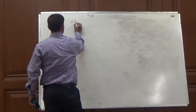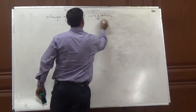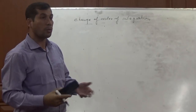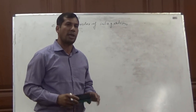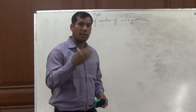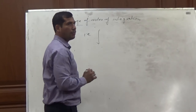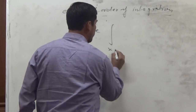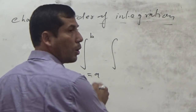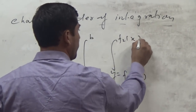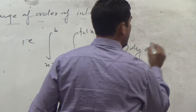Today we will discuss the change of order of integration. First of all, what is the need — why we are studying change of order of integration? Change of order of integration means we will change the limits of the integration. We will change the strip: if the strip is parallel to the x-axis then we will consider it parallel to the y-axis. In double integration, the first integration for x goes from x = a to b, with constant limits, and the second integration is a function of x, integrating with respect to y. First we integrate with respect to y, then with respect to x.